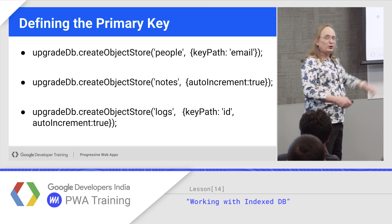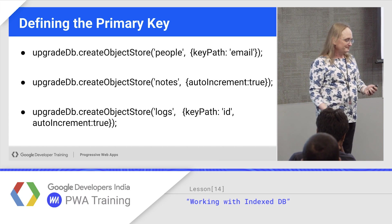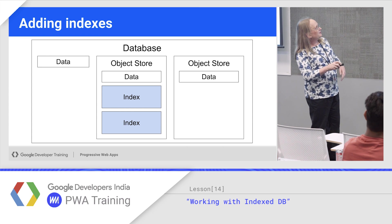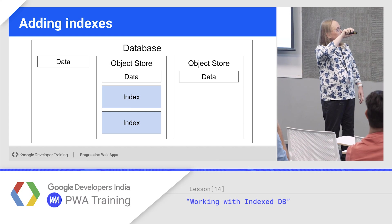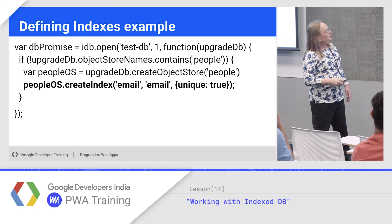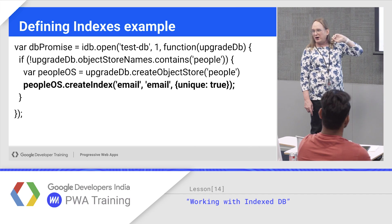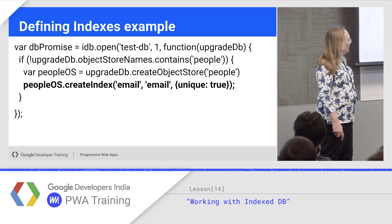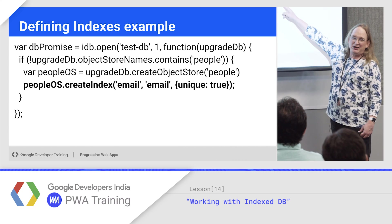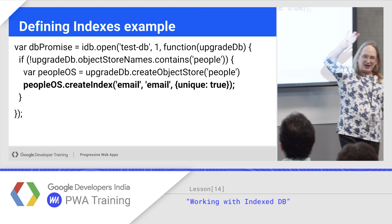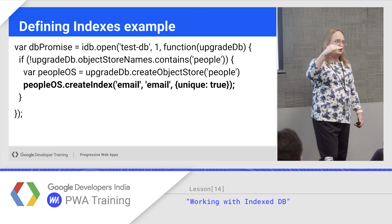Or you can give it a key path and auto-increment, so now you have a property added to every object that's an incrementing unique number. To add indexes — because you want to be able to search and sort on more than just the key — call createIndex. Tell it the name of the index, the name of the field you want to index (they don't have to be identical), and whether it's a unique value or not. Unique matters for a put — if it's unique, we'll look at the email index and replace; if not unique, a put would add a second entry with that email.